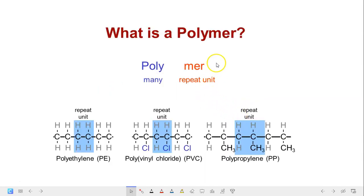So what is a polymer? Polymer is made up of the word poly and mer. Poly stands for many and mer stands for repeat unit. So the blue blocks here represent the repeat unit or the building blocks of the polymer of each of these polymers. We have three different polymers here. We have polyethylene or PE, polyvinyl chloride or PVC, and polypropylene, PP.